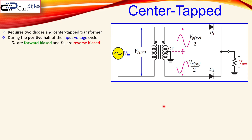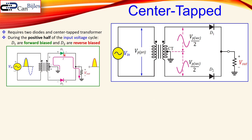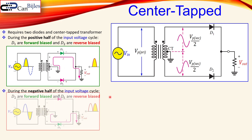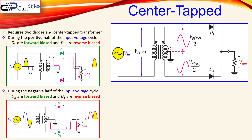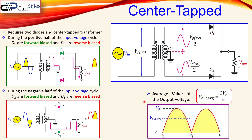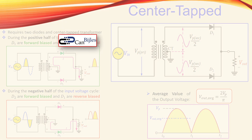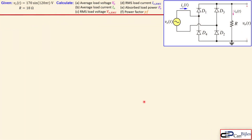During the positive half of the input cycle, D1 is forward biased and D2 is reverse biased, giving this current flow. During the negative part of the cycle, D2 is on and D1 is off. You again get the absolute value of the input at the output, and the formula for the average value is exactly the same expression and the same plot as for the bridge rectifier.